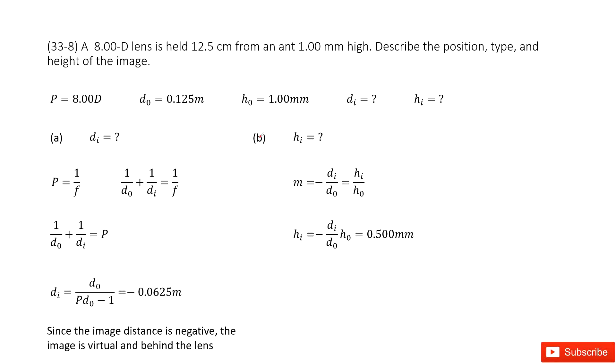Let's write down the given quantities about the lens. First one is the power P = 8.00D. Second one is object distance d0 = 0.125m. Third one is h0 = 1.00mm. So now what we need to find, we need to find the image distance dI and the image height hI.